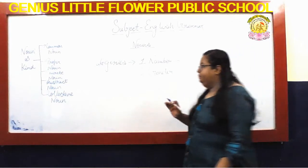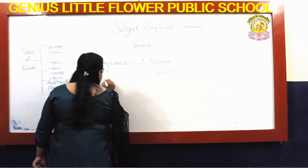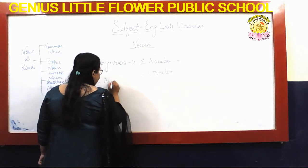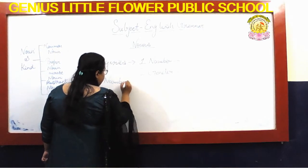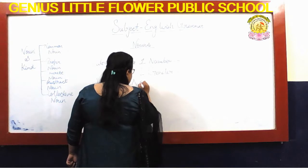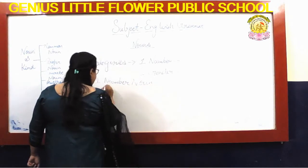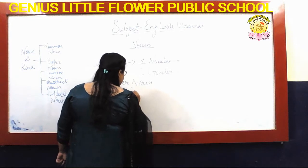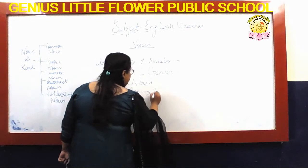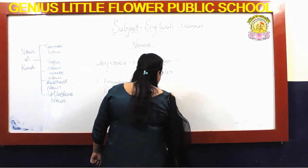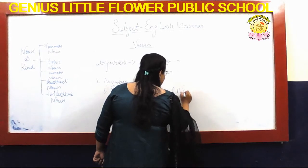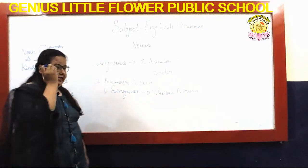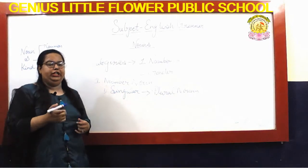Now I will give you many examples. First I am telling you about number nouns. Number nouns have two parts — you have to change a singular noun into a plural noun. There are some rules for how to change it.